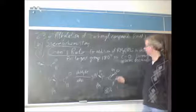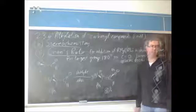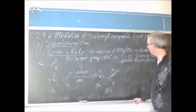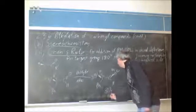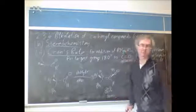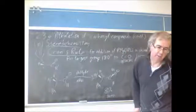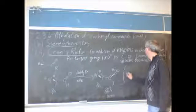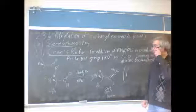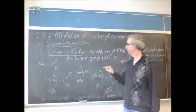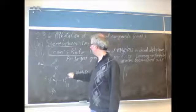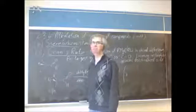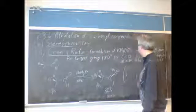The term used for describing this type of diastereomer — this one is called threo — and the other diastereomer that's possible would be if the incoming group came in from the other side, the side of the medium group, which would give us the erythro product.